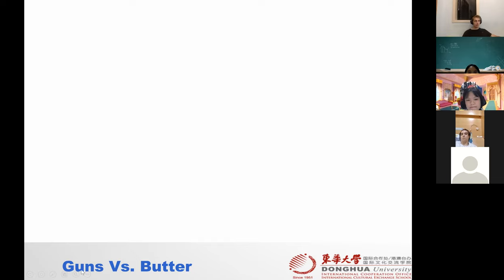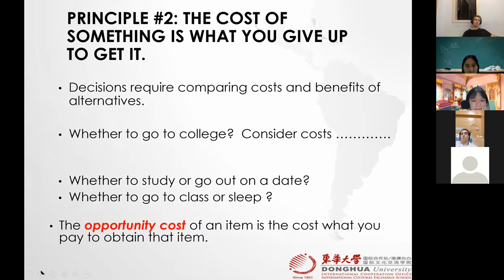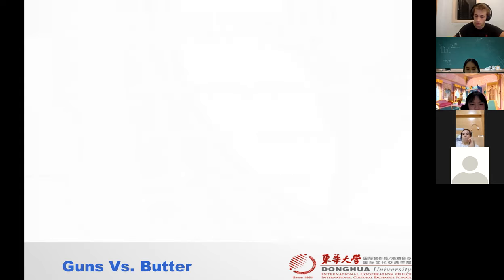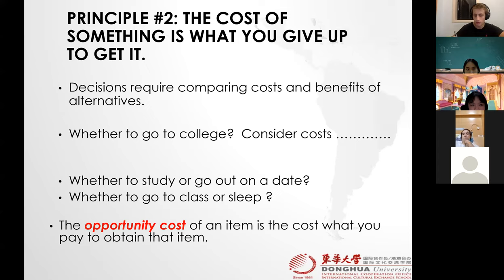Let's move forward — I will be sending you the link for that video. The second principle is: the cost of something is what you give up to get it, which means the cost of the trade-off. In the previous principle we had alternatives, but here we have the cost of the alternative.